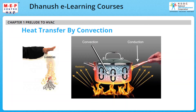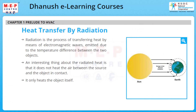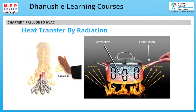Radiation is the process of transferring heat by means of electromagnetic waves emitted due to the temperature difference between two objects. An interesting thing about radiated heat is that it does not heat the air between the source and the object in contact — it only heats the object itself. Heat is radiated from a warm surface and contacts cooler objects within the space.